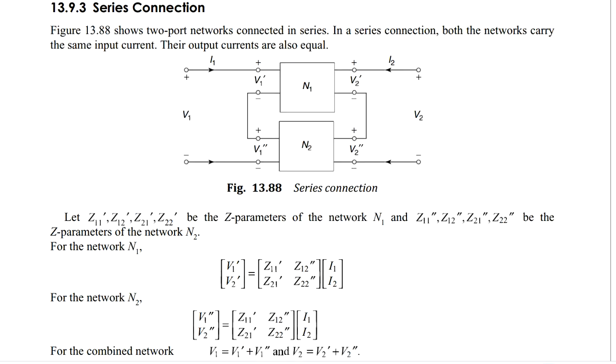Because if you apply one KVL here, what do you get? If you apply KVL in this loop, you will get minus V1 is equal to V1 prime plus V1 double prime. Similarly towards the second port side,